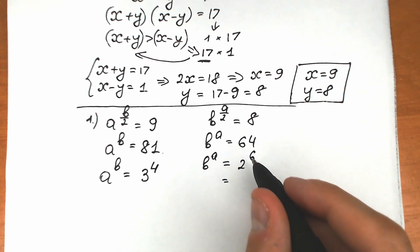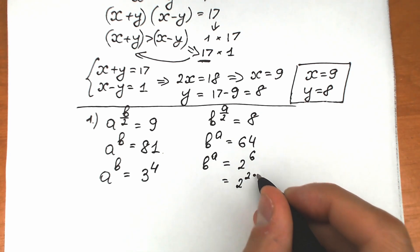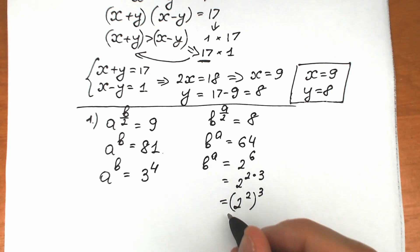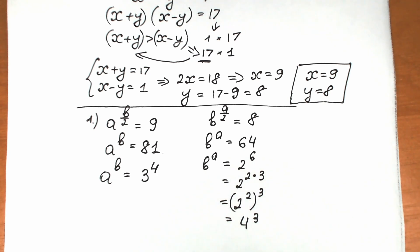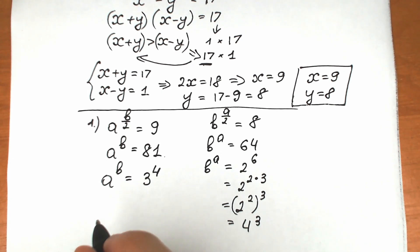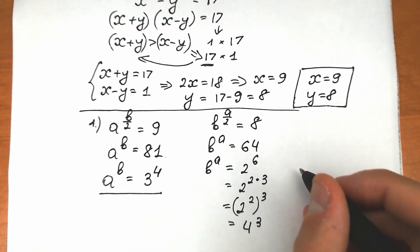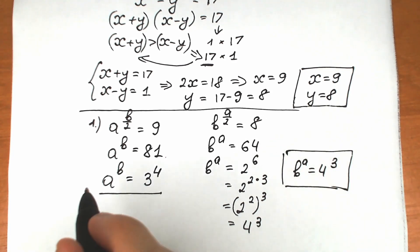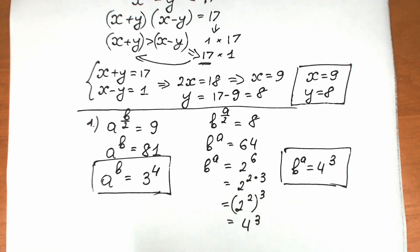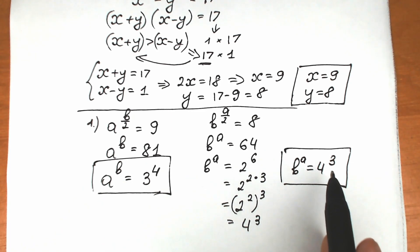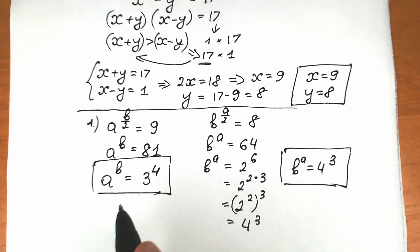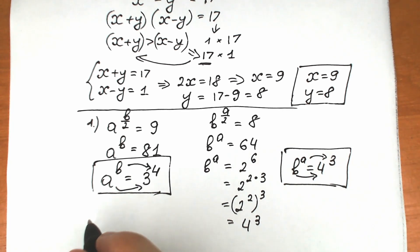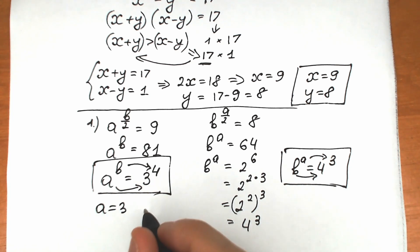Writing 2 to the sixth as 2 to the power 2 times 3, we get 2 squared, cubed, which equals 4 to the third power. So we have a to the power b equal to 3 to the fourth, and b to the power a equal to 4 to the third. By inspection, a equals 3 and b equals 4 satisfies both equations.